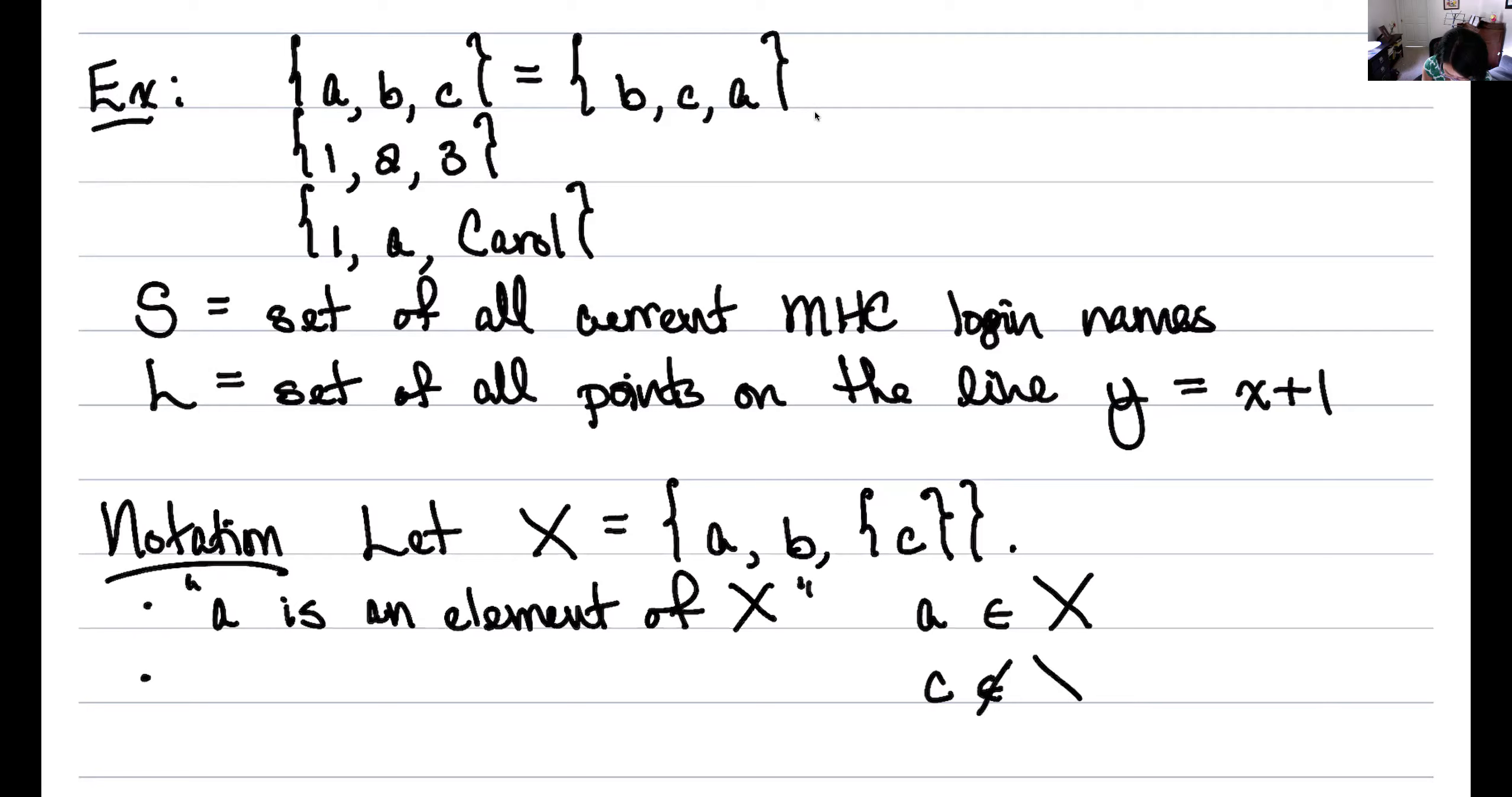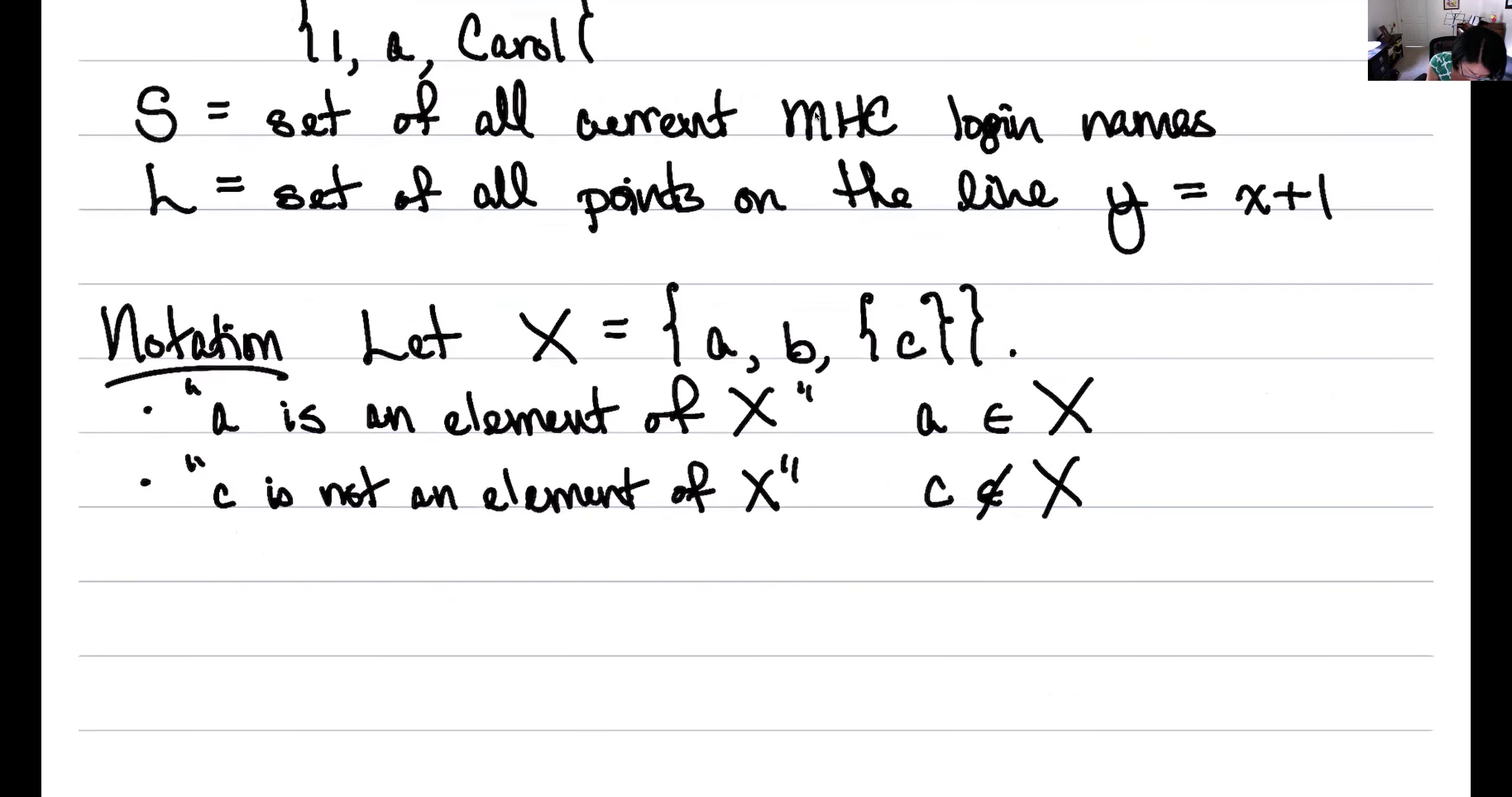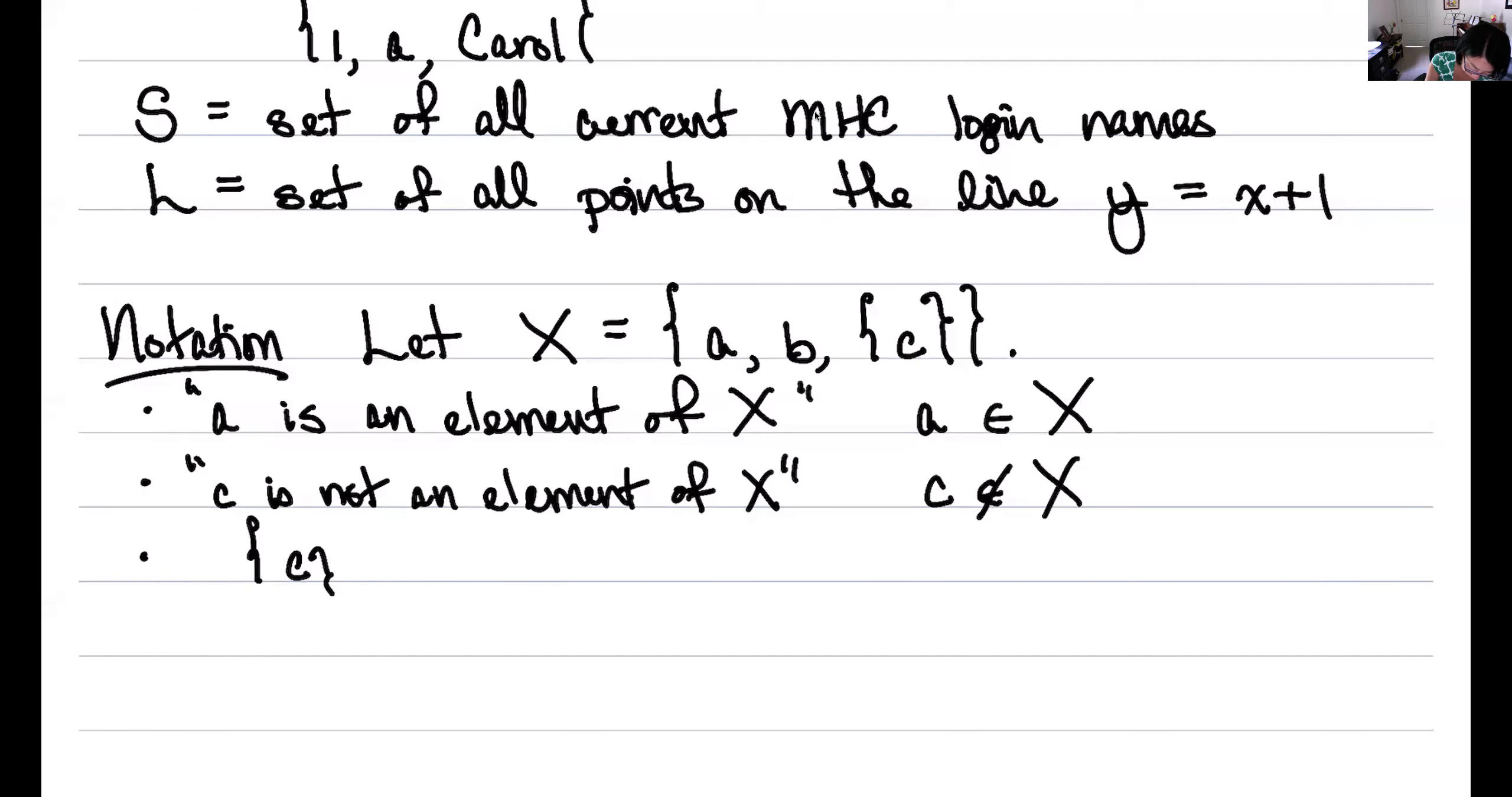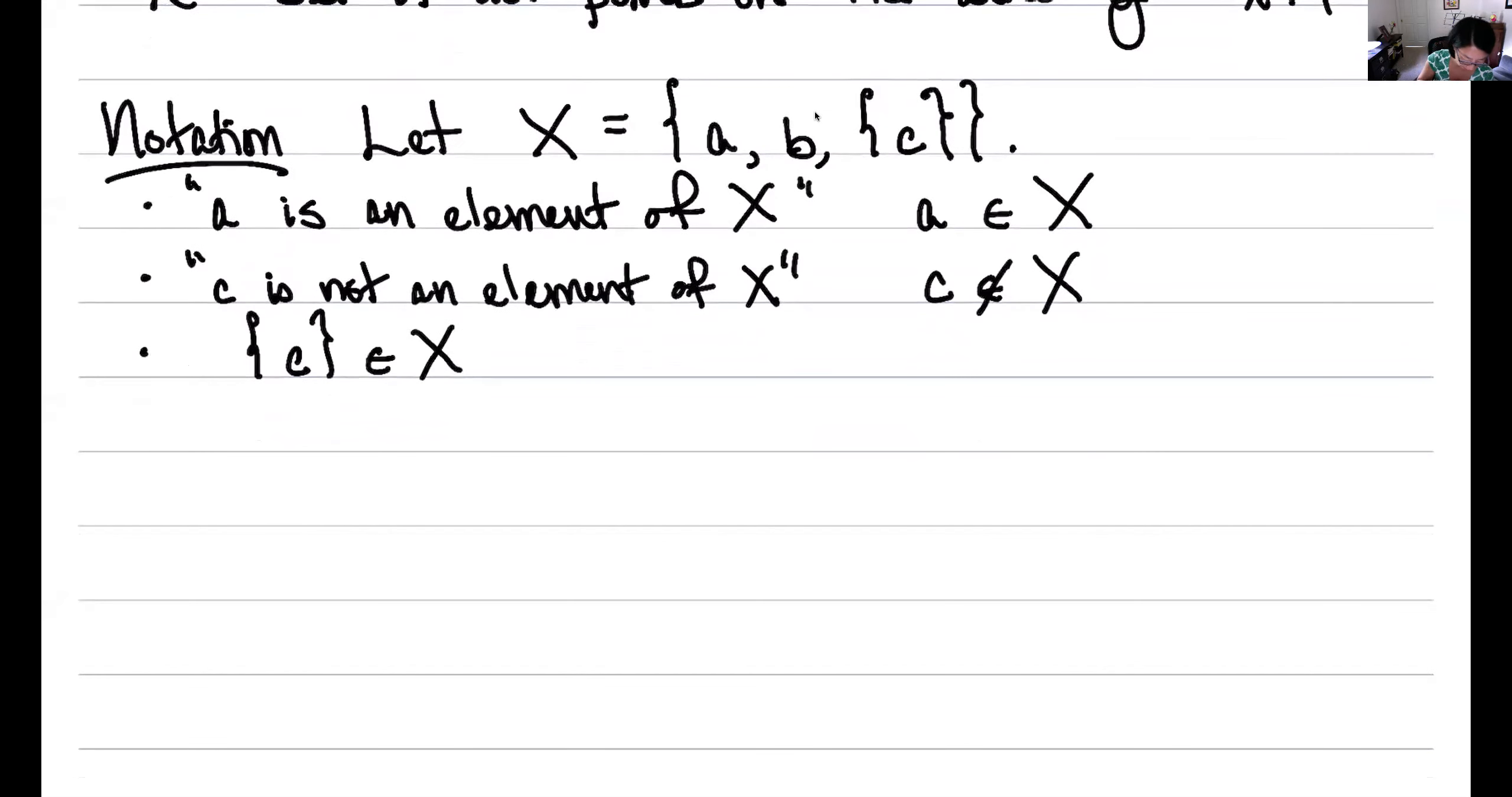So I can just put a slash through that, and I get 'c ∉ X', c is not an element of X, but the set containing c is an element of X. So that's a little bit more set notation. And let's look at some important examples now.